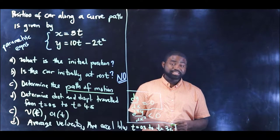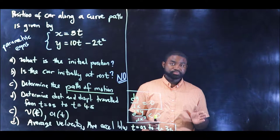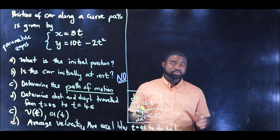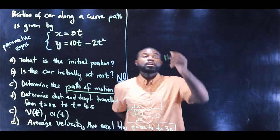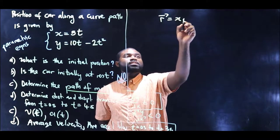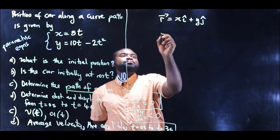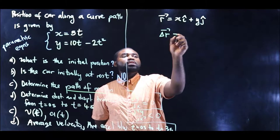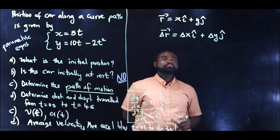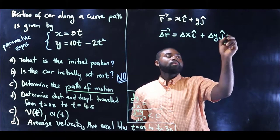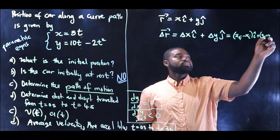The displacement of an object is simply defined as the difference between the final point and the initial point. So the displacement between two objects is really a state function — it depends only on the initial and the final point. The position vector is defined as r = xi + yj, so the displacement delta r is equal to delta xi + delta yj, which essentially is equal to (x final minus x initial)i + (y final minus y initial)j.